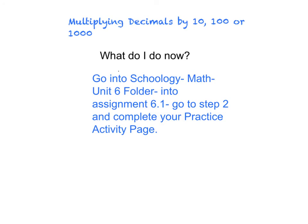So now it's time for you to show me that you can apply the skill that you just learned. So you're going to go back into Schoology. You're going to open up a math course. And you're going to go to the Unit 6 folder. When you open that up, you're going to go into Assignment 6.1, which is multiplying decimals by 10, 100, or 1,000. You're going to go to step number two. And you're going to complete the activity sheet. It's called multiplying decimals by 10, 100, or 1,000. It even says submit your work here. So when you're done with it and you go back into Schoology, it should be very easy to find.